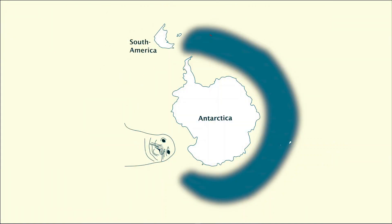After this rather optimistic tale about the European lynx, let's have a look at the Antarctic fur seal. Here is a very rough distribution map — this is not from the paper, but rather a combination of some information from the paper and some information from Wikipedia. Seals are occurring in the waters surrounding Antarctica, with a notable gap in the Pacific Ocean. They are using small islands as their breeding grounds, with South Georgia being by far the most important place.